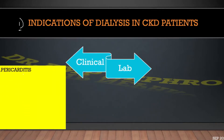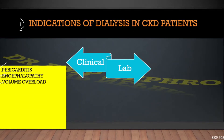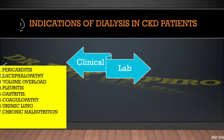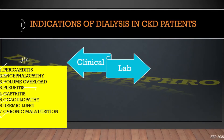When we say clinical indications, the first common clinical cases we usually encounter in medicine are: uremic pericarditis, uremic encephalopathy, refractory volume overload which is not responding to diuretics, and rarely lung manifestations in the form of pleuritis.